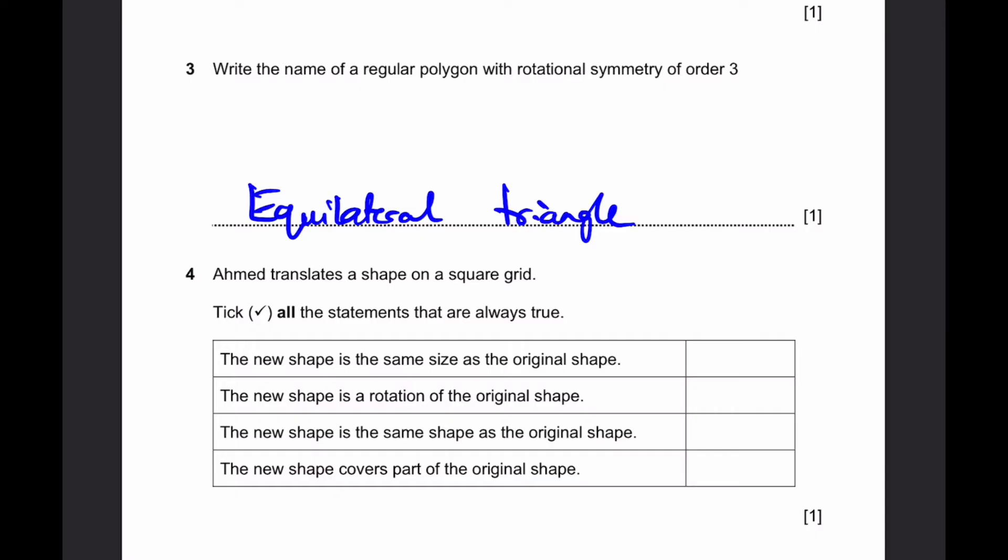Question 4. Agmed translates a shape on a square grid. Tick all the statements that are always true. The new shape is the same size as the original shape. This is true. Translation does not change its size. The new shape is a rotation of the original shape. This is never true. Translation never rotates the shape. The new shape is the same shape as the original shape. This is true. Translation never changes the shape of an object. The new shape covers part of the original shape. This is not always true. This could be true if the translation is small enough, but it's not always true. If the translation is extremely large, or at least if it's larger than the side lengths of the shape, then this is false. So it's not always true, therefore we can't tick it.